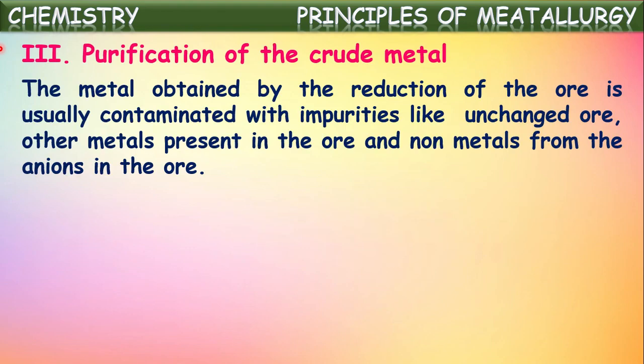The metal obtained by the reduction of the ore is usually contaminated with impurities like unchanged ore, other metals present in the ore, and non-metals from the anions in the ore. These impurities may be present in the crude metal extracted from its ore. So that crude metal should be separated from these impurities, then it becomes pure.